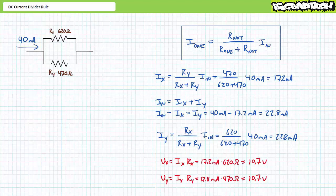As a final means of checking our work, an application of Ohm's law demonstrates 17.2 milliamps of current traveling through a 620 ohm resistor results in a roughly 10.7 volt drop, as does 22.8 milliamps routed through a 470 ohm resistor. Voltage across these parallel elements is indeed the same and what comes in does indeed come out. That's all there is to say about the current divider rule besides this.